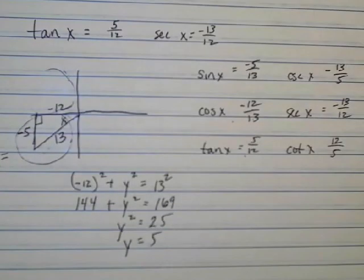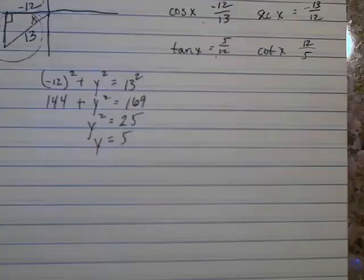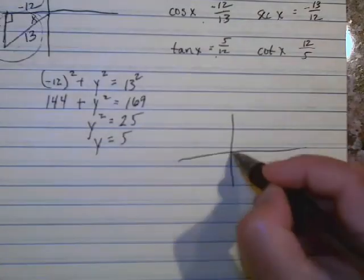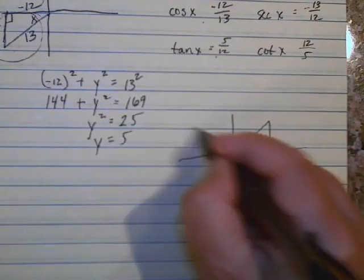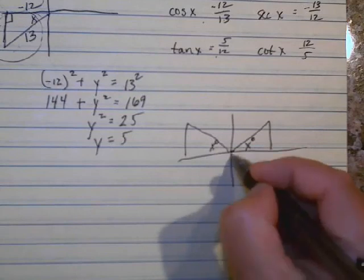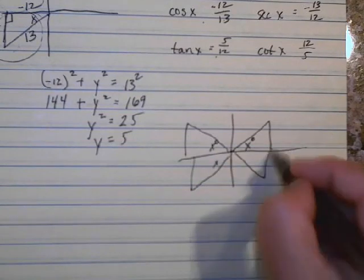So it's really helpful if you will draw your triangles. If your triangle is in the first quadrant, it'll look like this. If your triangle is in the second quadrant, it'll look like this. Third quadrant like that. And fourth quadrant like this, just to give you a little hint.